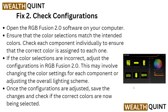The second solution is to check the configuration. Open your RGB Fusion 2.0 software on your computer, then ensure that the color selection matches the intended color. Check each component individually to ensure that the correct color is assigned to each one. If the color selections are incorrect, adjust the configuration in RGB Fusion 2.0 — this may involve changing the color settings for each component or adjusting the overall lighting scheme. Once the configuration is adjusted, save the changes and check if the correct colors are now being selected.